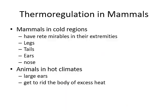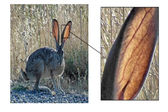Temperature regulation in mammals: animals in cold areas have rete mirabile in the legs, tails, ears, and nose for thermoregulation. Animals in hot climates have longer ears to get rid of excess body heat. These longer ears contain blood vessels that dissipate heat from the blood into the environment.